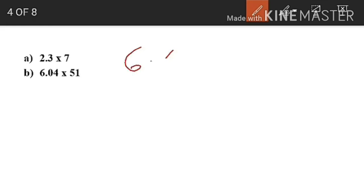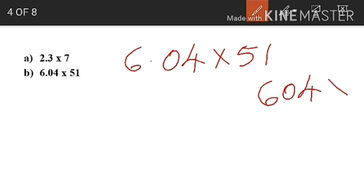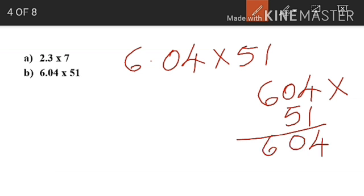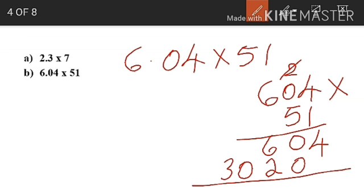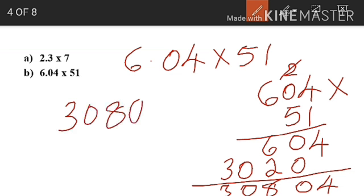Now let us do the next problem: 6.04 into 51. We have to multiply them as whole numbers, so 604 into 51. 1 times 4 is 4, 1 times 0 is 0, 1 times 6 is 6. Then 5 times 4 is 20 — put 0 here and carry 2. 5 times 0 is 0, plus 2 is 2. 5 times 6 is 30. Now let us add: we get 30804.